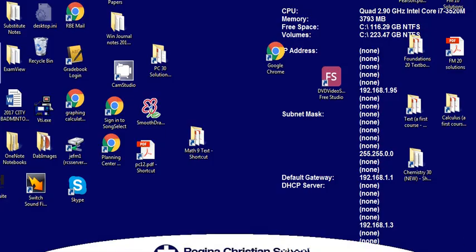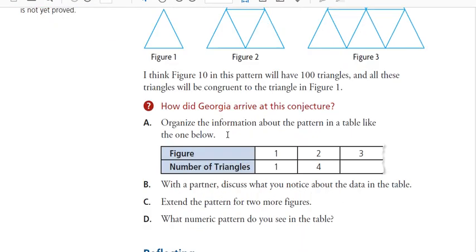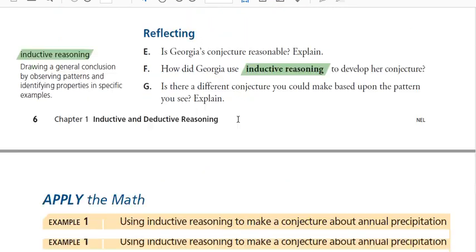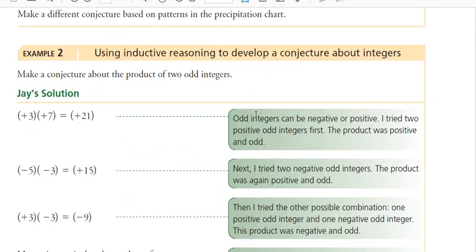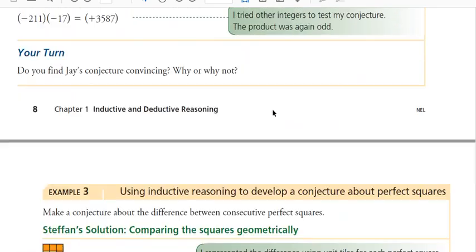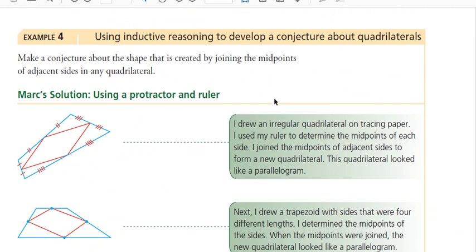Now, with inductive reasoning also, we need to understand that there are assumptions that we make as well. So in our reasoning. Now, our reasoning could be faulty because of the assumptions that we make. Here's one I'm just going to cover real quick. You don't have to copy this down.